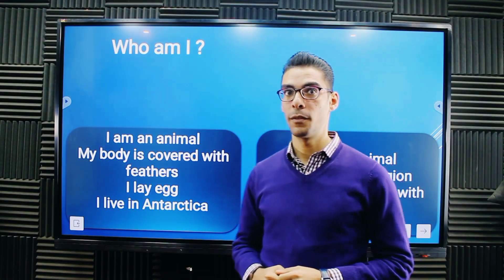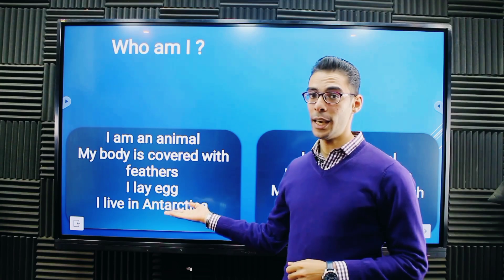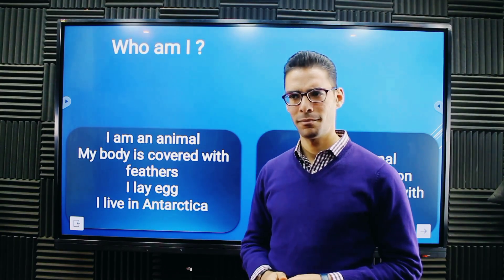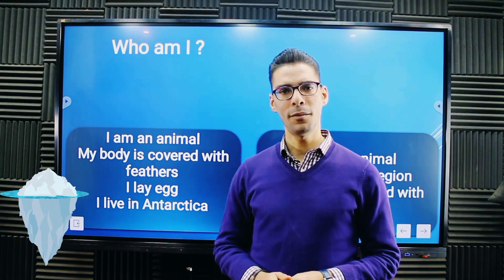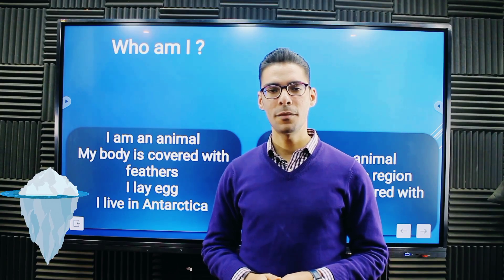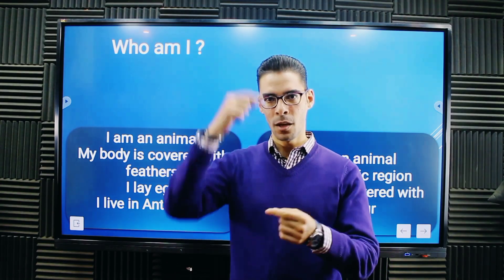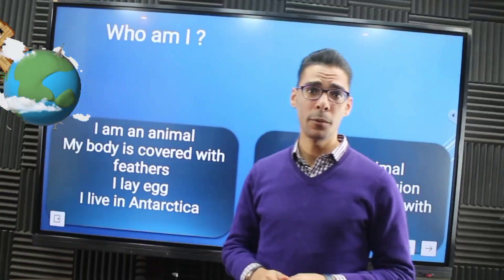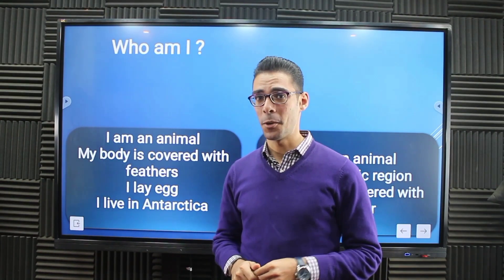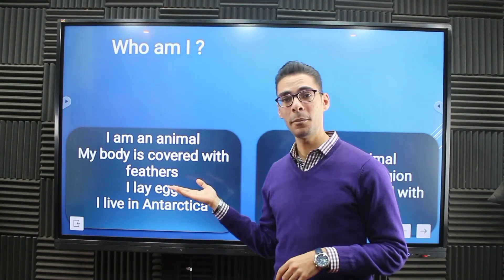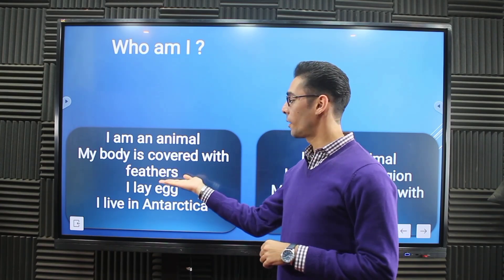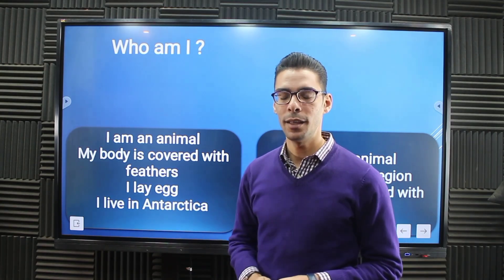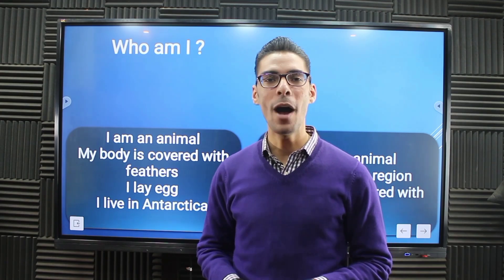My body is covered with feathers. I lay eggs. I live in Antarctica. Antarctica is a very cold place found at one of the two poles of Earth, especially the southern one. So the question again: I'm an animal, my body is covered with feathers, I lay eggs and I live in Antarctica. Who am I?